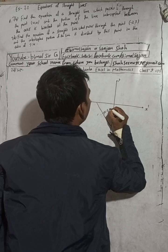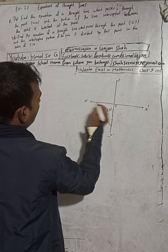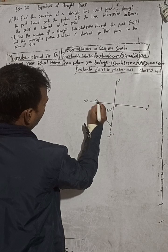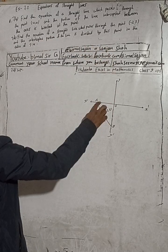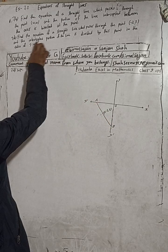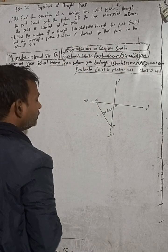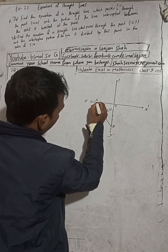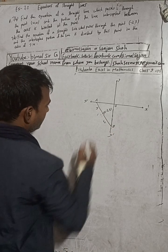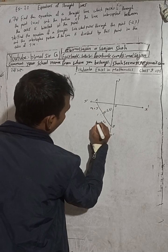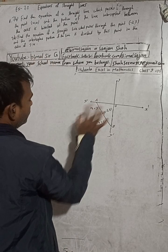This point P equals minus 2 comma 3. Now looking at the intercepts, I suppose this is point A on the x-axis and point B on the y-axis. The equation of a straight line passes through this point, and the intercepted portion of the line is divided by point P in the ratio 3 to 4 — three from the x side and four from the y side.